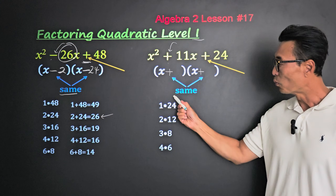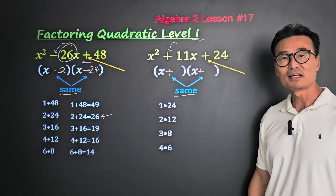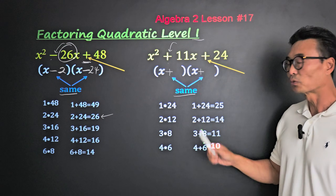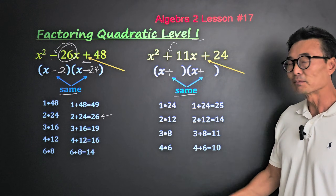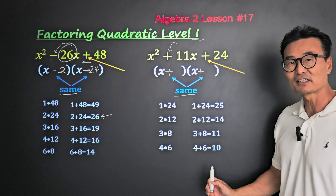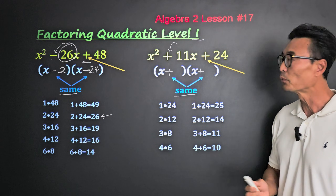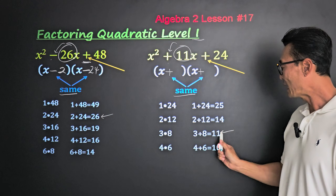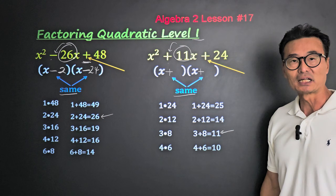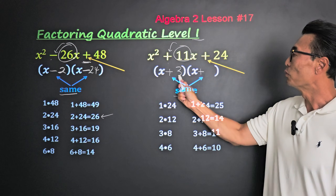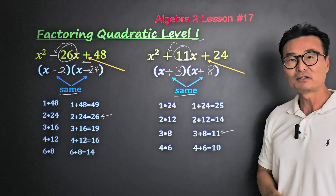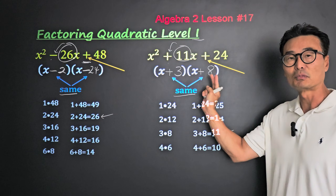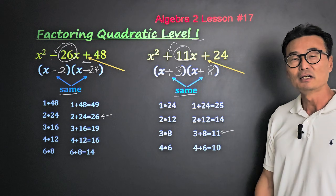When the signs are the same, we add these numbers: 1 plus 24 is 25, then 2 plus 12, 3 plus 8, and 4 plus 6 — and we want the one that gives us 11. When we add 3 and 8, we get 11. So we'll put 3 here and 8 here, and as before, these two numbers are switchable.